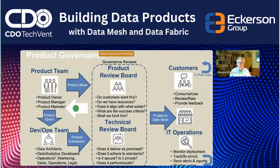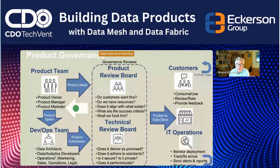Product governance is a complicated workflow. Just like it takes a village to raise a child, it takes multiple teams and governance boards to create a data product — especially one delivered externally. You'll get your DevOps team, operations, a product review board to decide whether to publish, and a technical review board to evaluate standards. It's iterative: once customers have the product, you gather feedback to enrich and modify it, and operations tracks system usage to ensure quality, consistency, and performance.